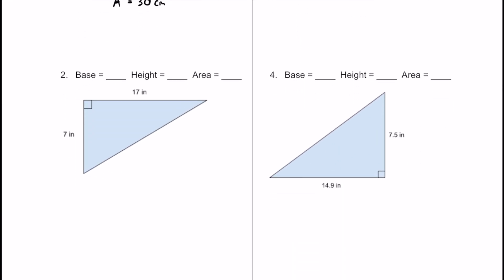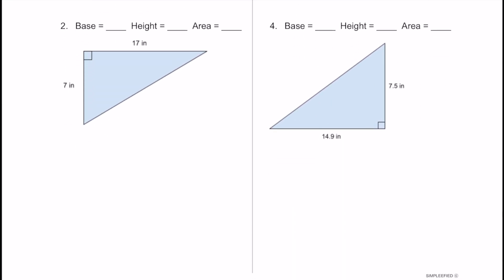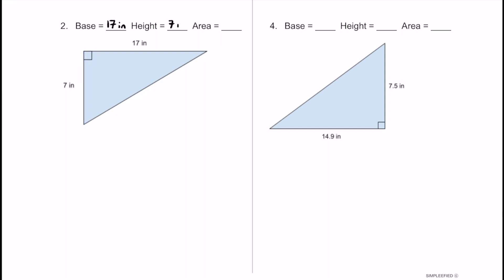Here's number 2. For this triangle, we start by finding the base. The base is actually up here this time — depending on how you're looking at the triangle — but we can just flip it upside down. So the base is going to be 17 inches. The height is perpendicular to it, and this right angle box shows 90 degrees, so the height is 7 inches.